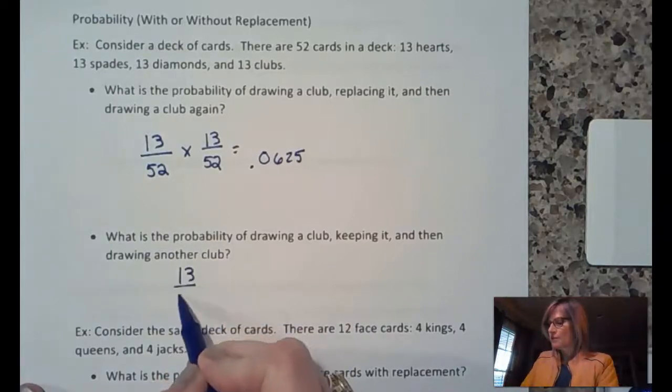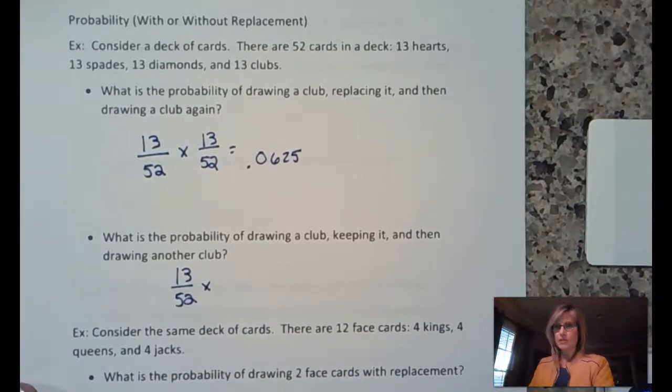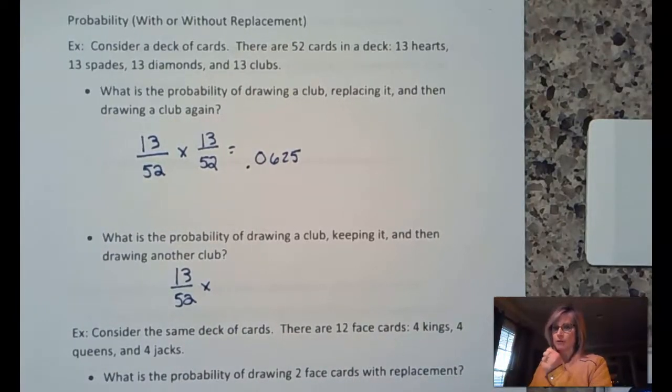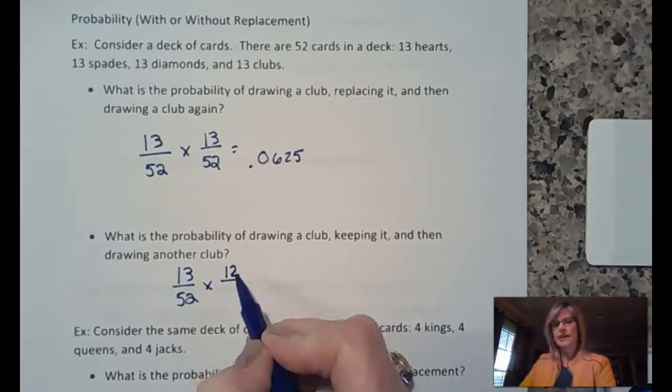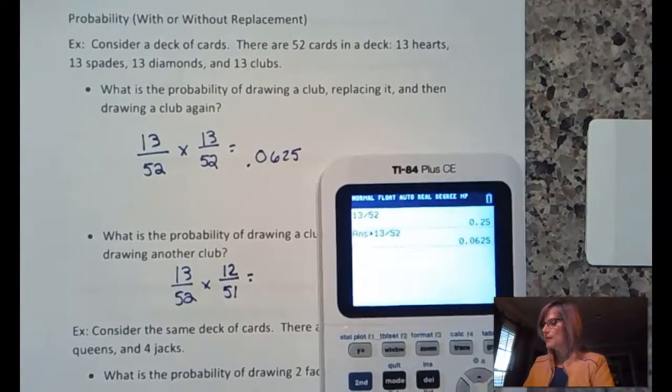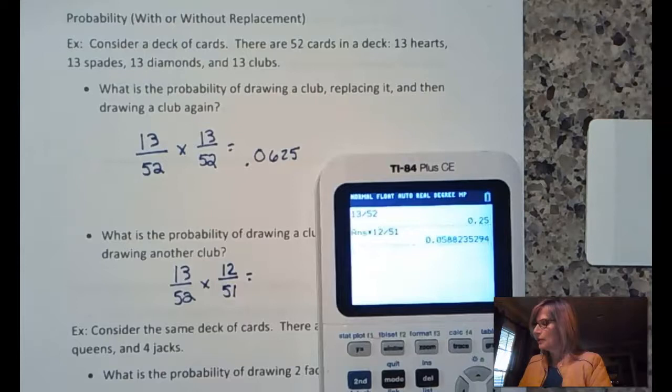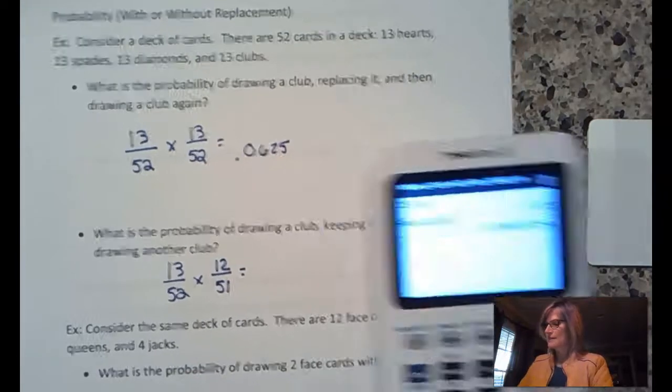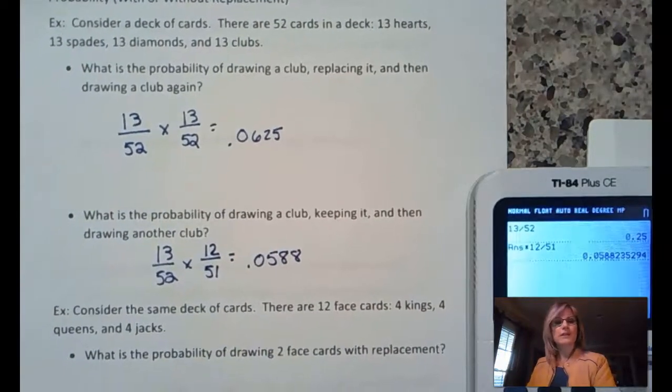There are still 13 clubs out of all 52 cards, and then we draw one club out. So, we did have 13, but I'm holding one in my hand. I put it in my pocket. So, now we have 12 clubs left and we have 51 cards left. This probability is going to be slightly different. 13 over 52 times 12 over 51, 0.0588. Just a little bit different.